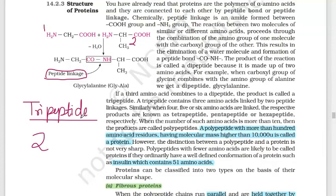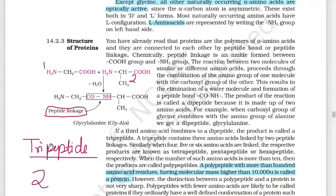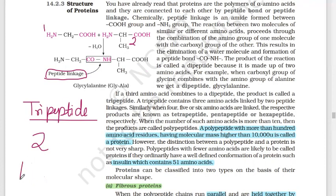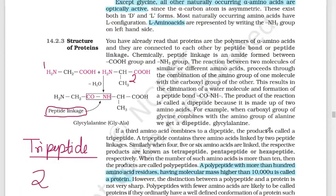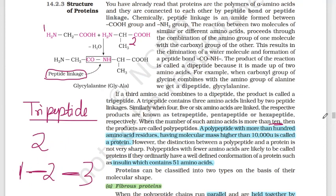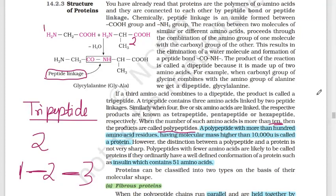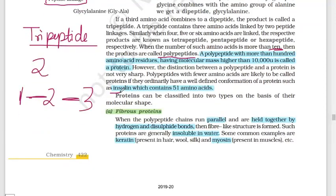A tripeptide involves 3 amino acids with 2 peptide bonds. More than 10 amino acids form a polypeptide. For example, muscle molecules can have 10,000 or more amino acids — these are called proteins. Insulin is an example of a protein and contains 51 amino acids.